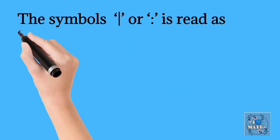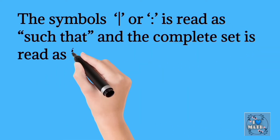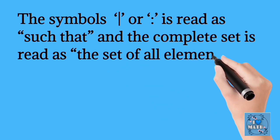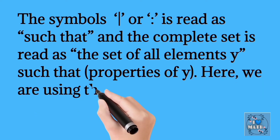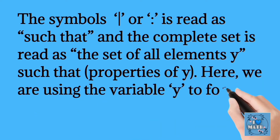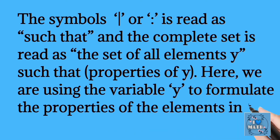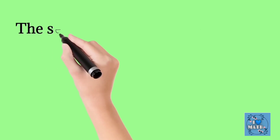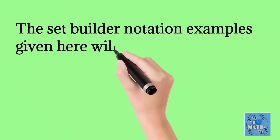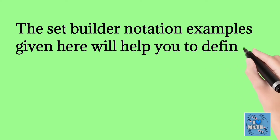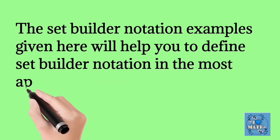The symbol | or : is read as 'such that,' and the complete set is read as 'the set of all elements y such that properties of y.' Here we are using the variable y to formulate the properties of the elements in the set. The set builder notation examples given here will help you to define set builder notation in the most appropriate way.